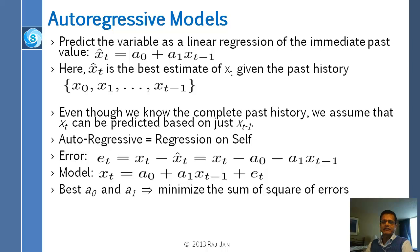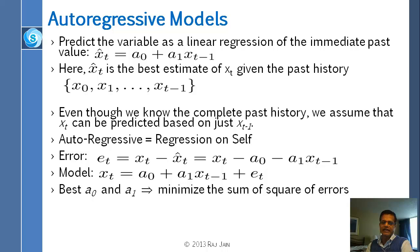This is called autoregressive because all we are doing is regression — linear regression — and 'auto' means on itself. Rather than y being regressed on x, x is regressed on x. There will be an error: at the end of the day we observe xt, and the difference xt − x̂_t is called the error. So the model is xt = a0 + a1·x_{t-1} + et.